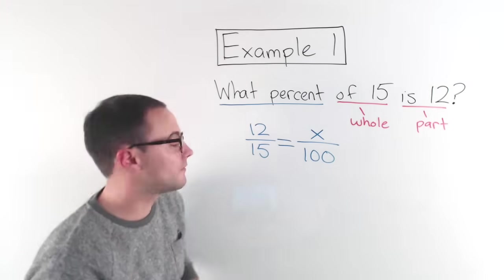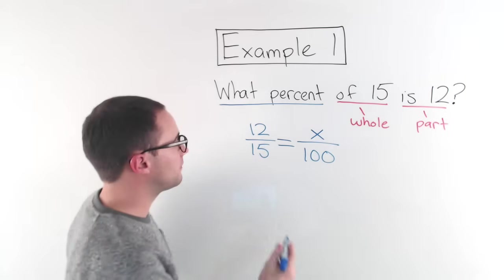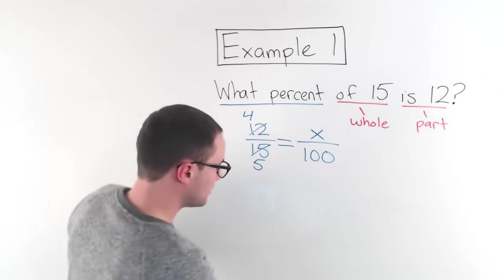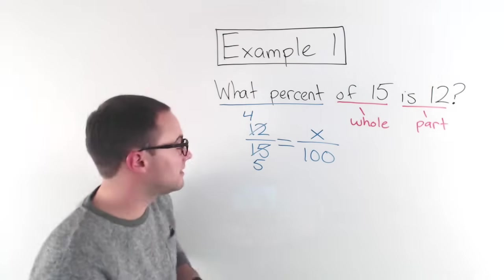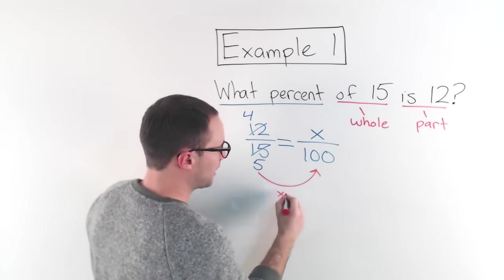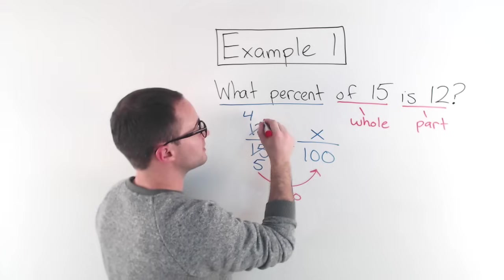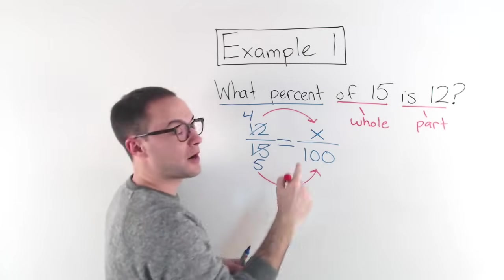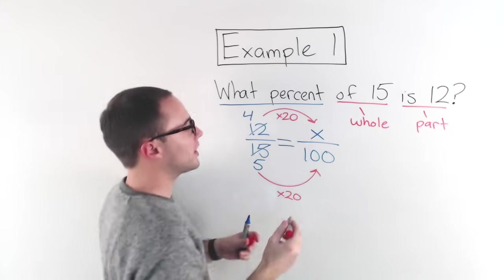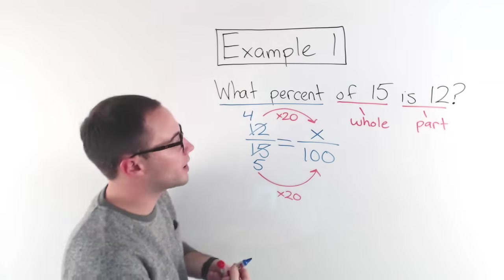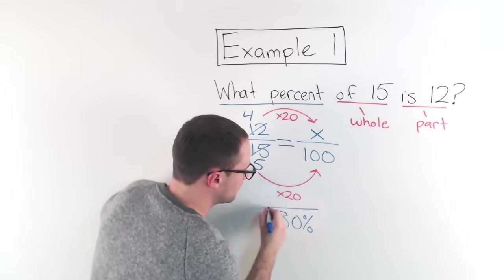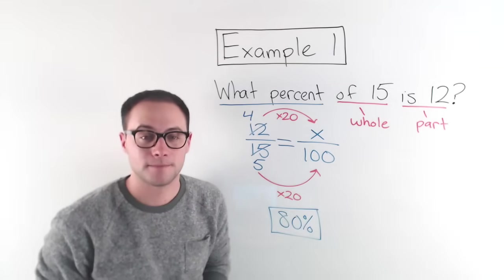So 12 over 15, I can simplify it, right? Three is a common factor. So that becomes four and that becomes five. And now mental math is really easy. Well, five to get to a hundred, I just multiply by 20. So I need to do the same to get, to figure out what X is, what my missing percent is. I just multiply by 20 as well. So four times 20 is 80, which means what percent? It's 80%. Okay.